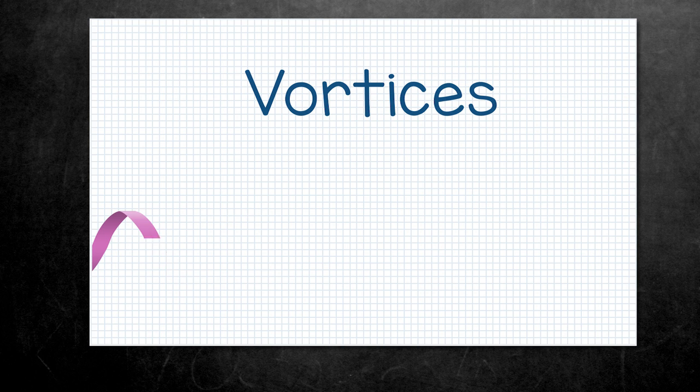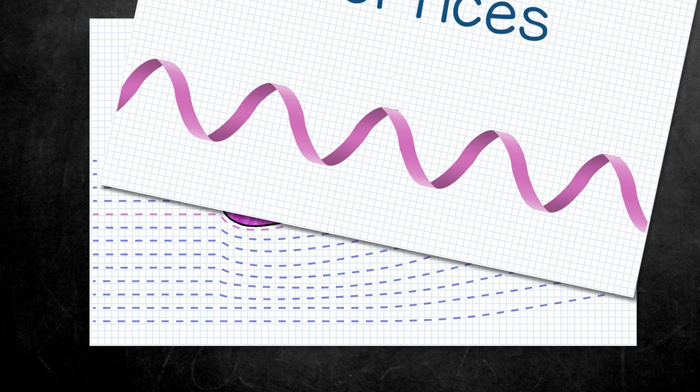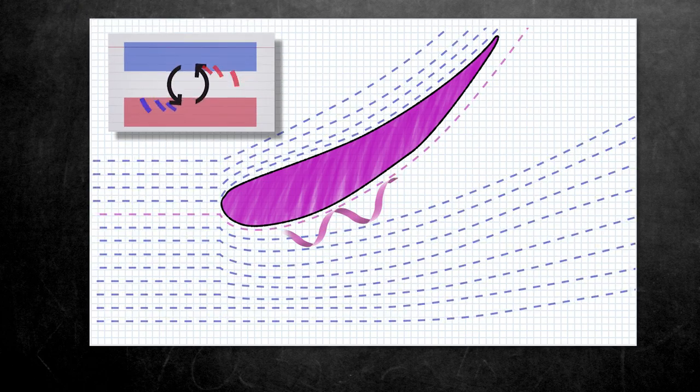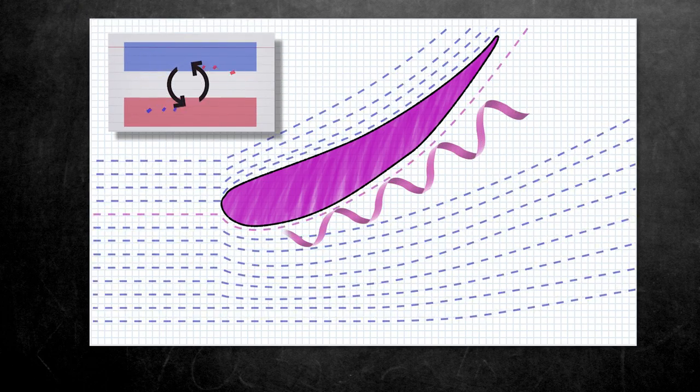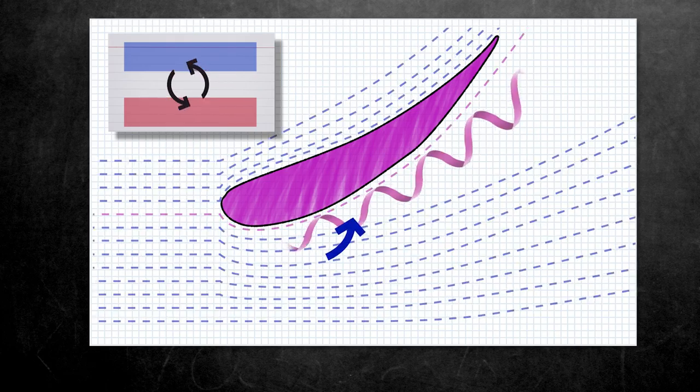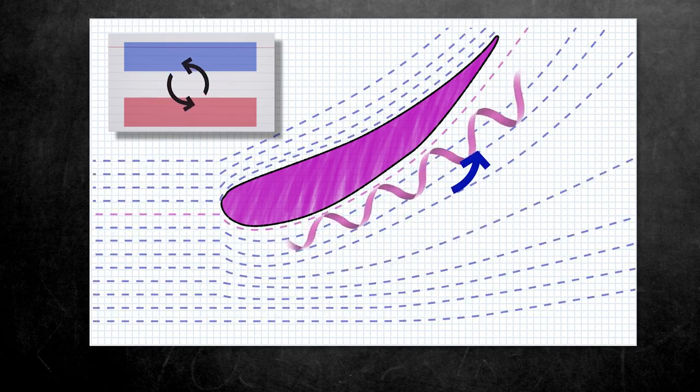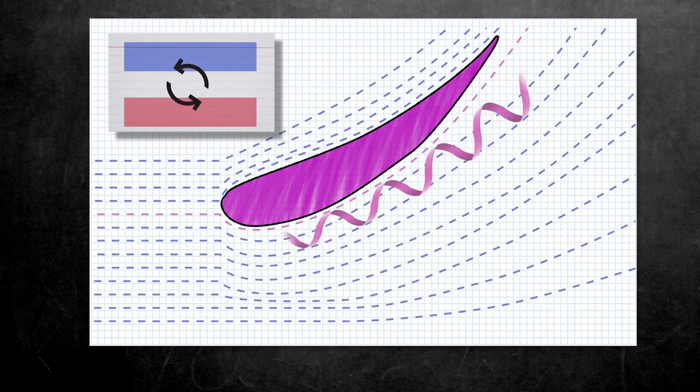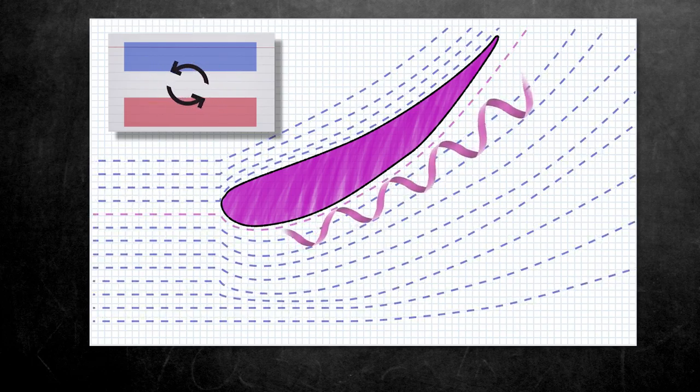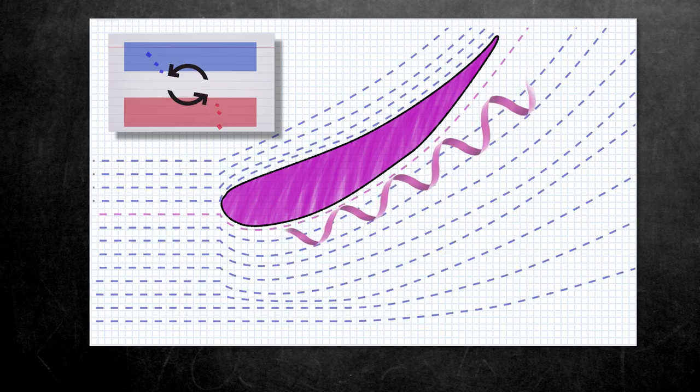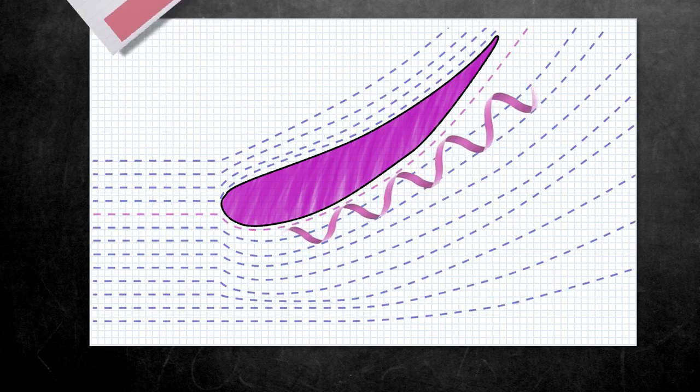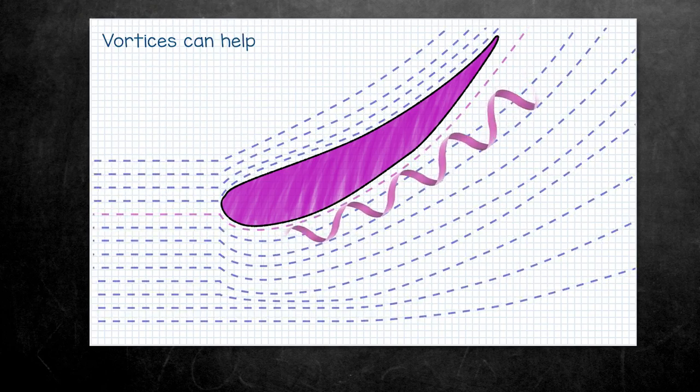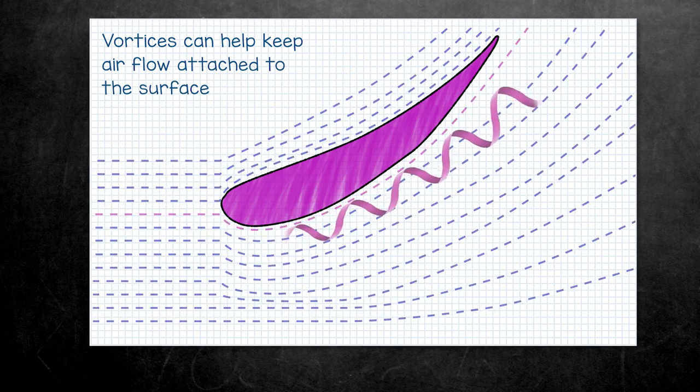A vortex is just a spiral of air spinning like a screw along the airflow. So if we can imagine getting a vortex of air to flow between the attached boundary layer and high energy separated airflow, you can see how it can start bringing them together. Pulling the high energy detached air into the boundary layer and allowing it to stay attached for longer while smoothing out the disturbance between the boundary layer and the separated flow. So in short, a vortex can help keep airflow attached to the surface it's flowing around.